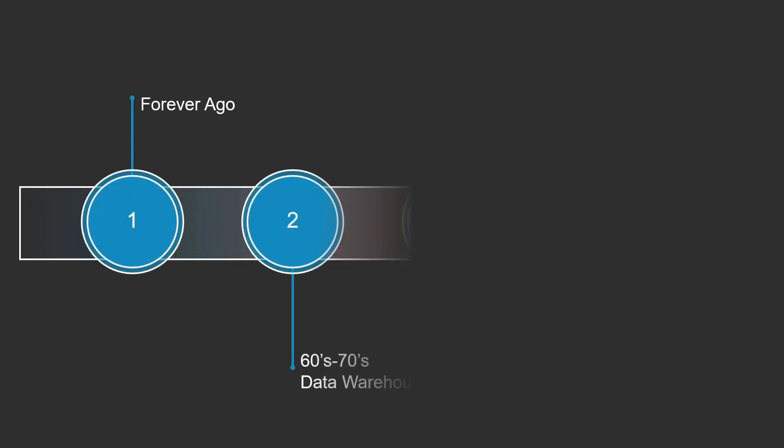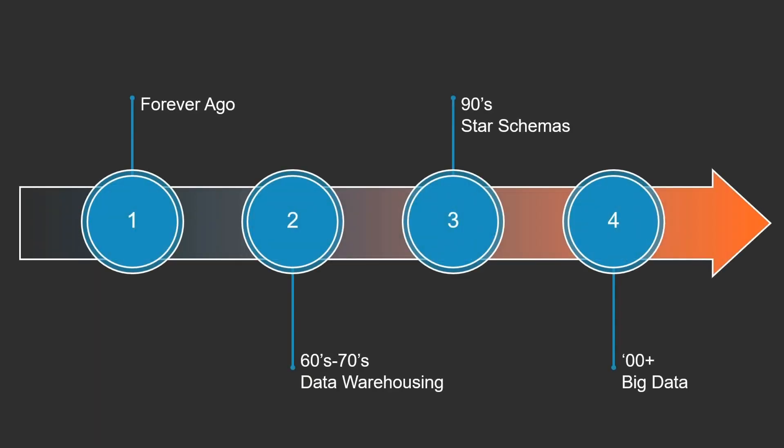Over the years, the roles in the field of data have transformed pretty dramatically, but the concepts behind them and what their functions are are pretty much the same. Data has been around forever, powering our lives, and starting in the early 60s, companies began to look at ways to organize this information and make something useful of it. Going into the 90s, we had a new concept called star schema, and then in 2000 with the boom of the internet, we were introduced to the concept of big data.